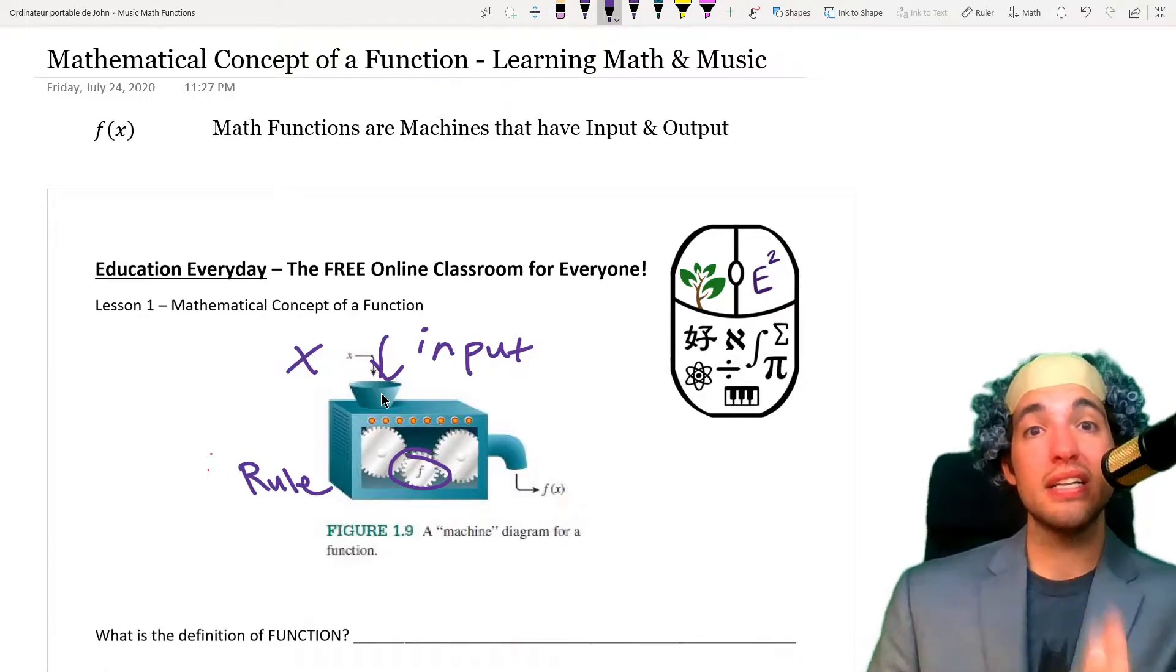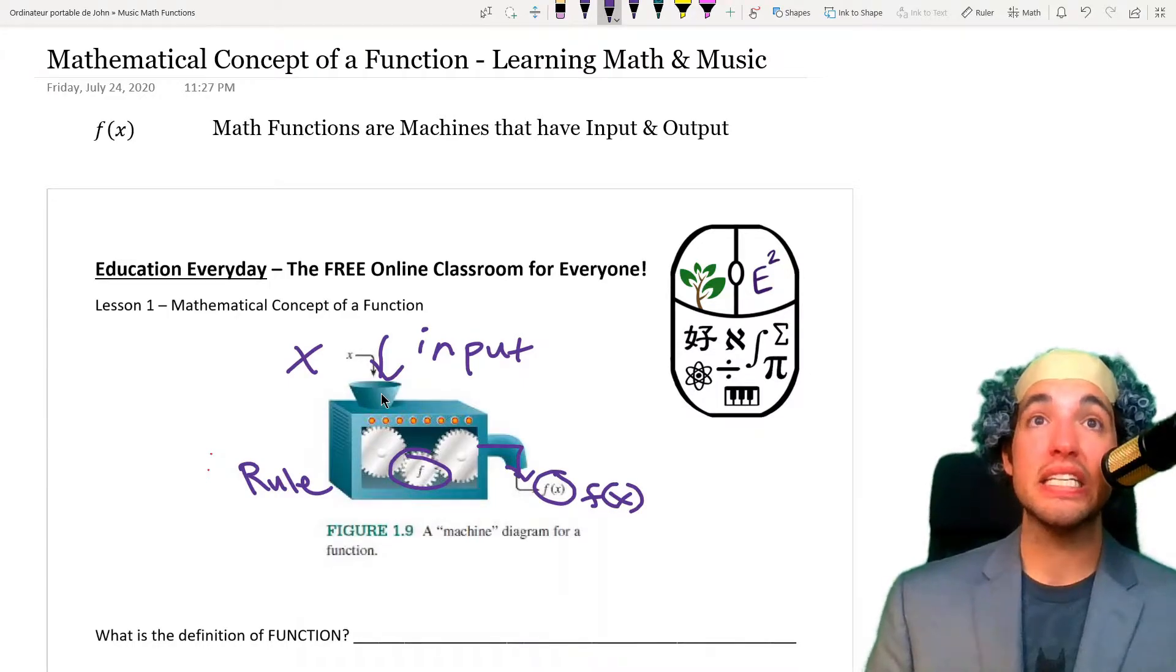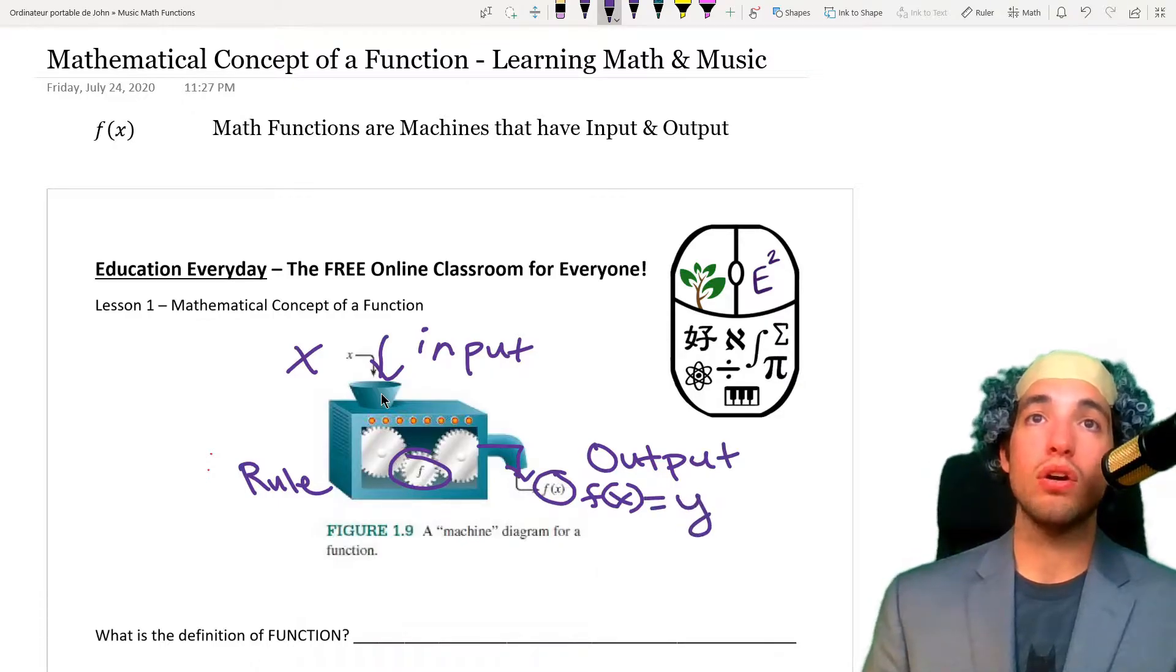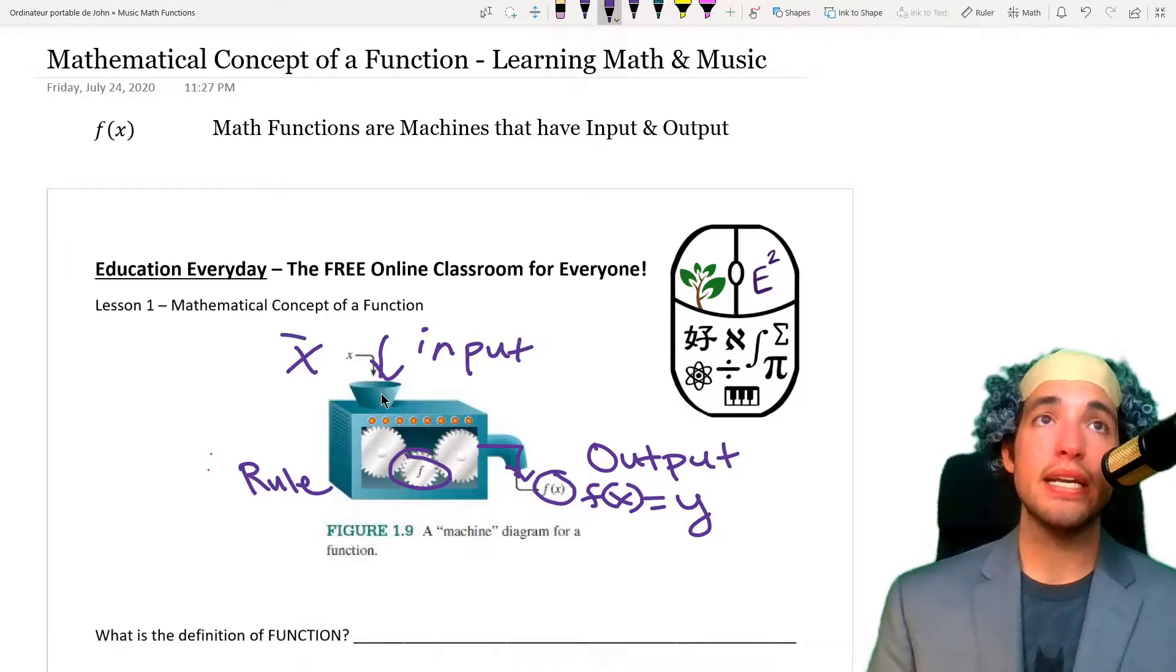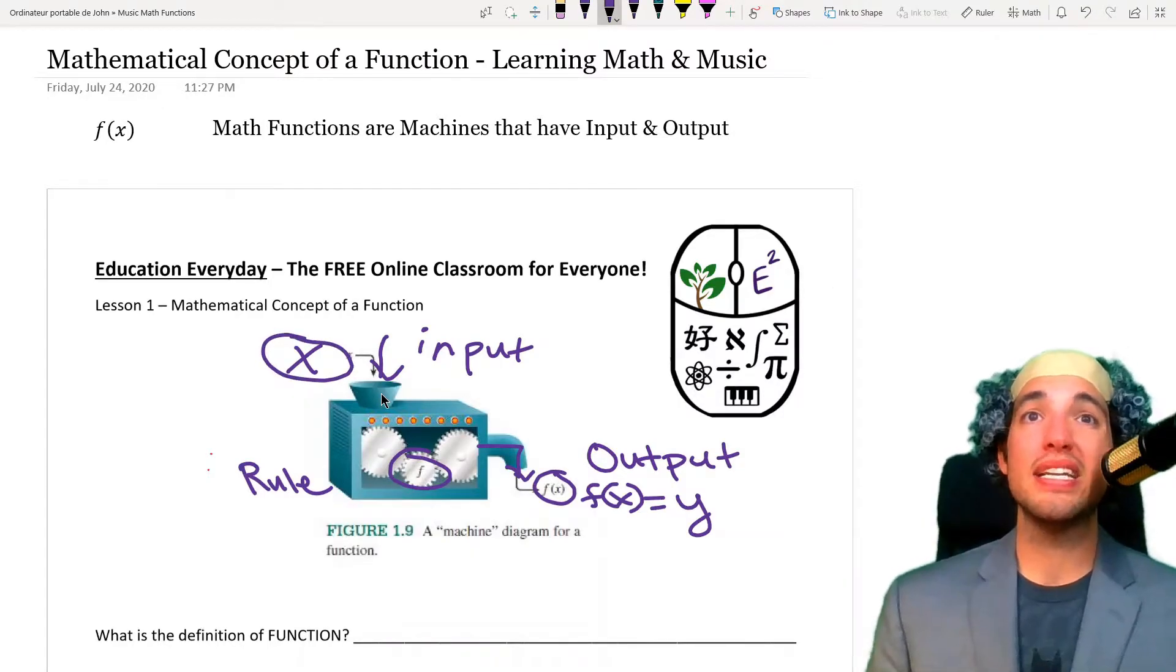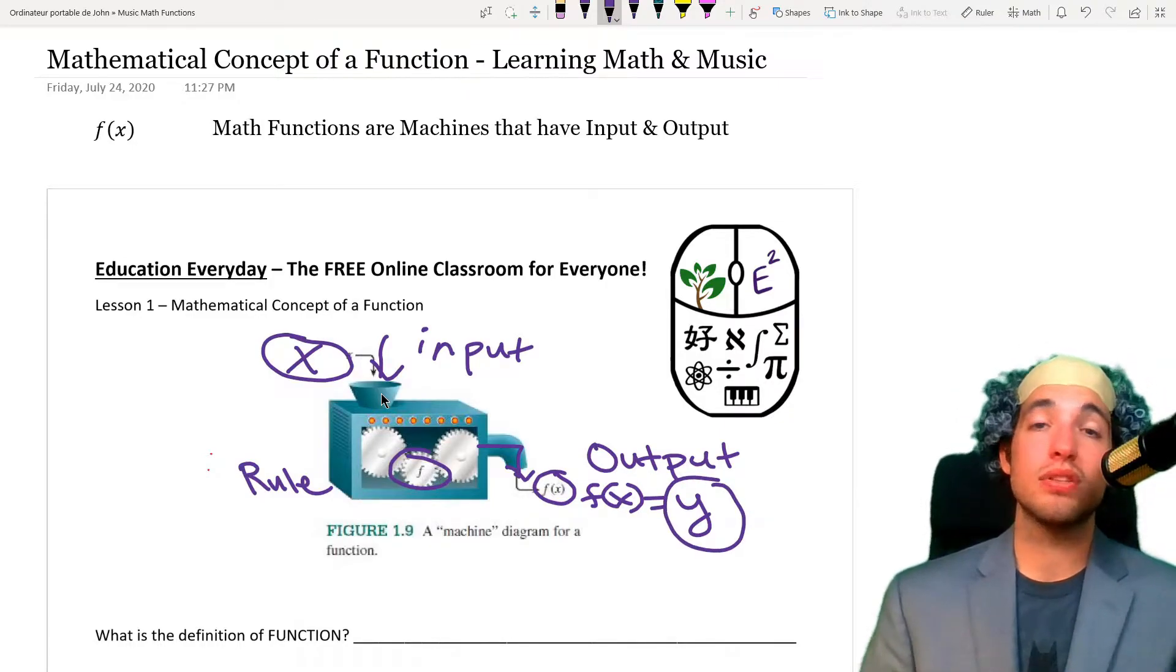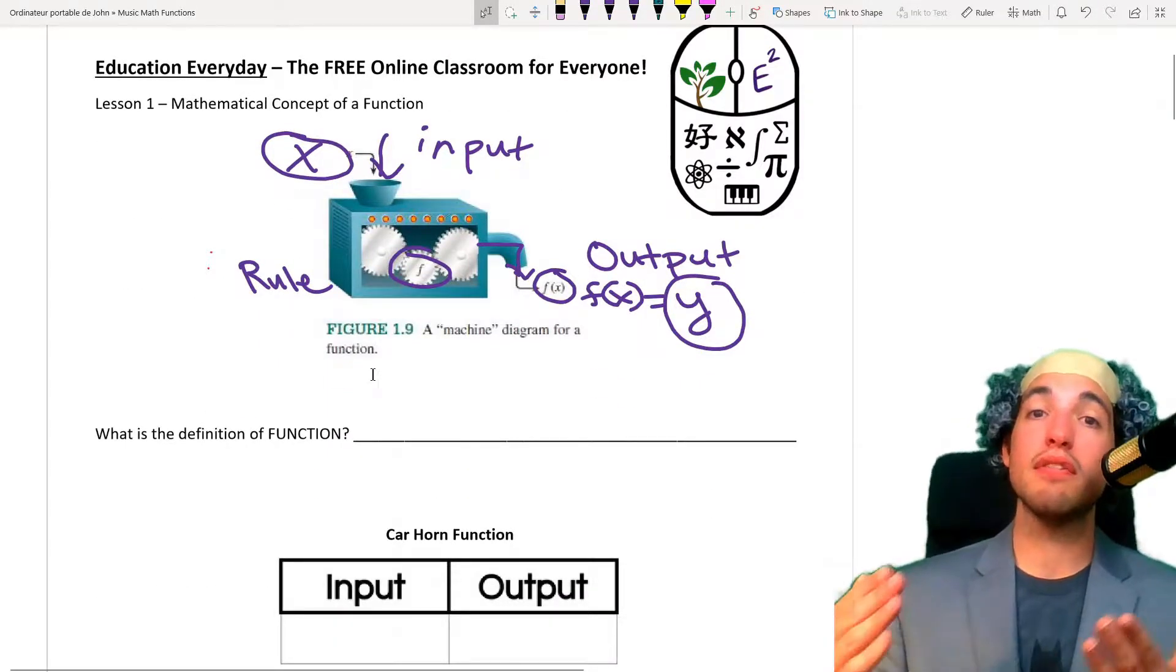And then once it does its rule, it will put something out. And what it is putting out is this f of x. That is the output. And the f of x, that is the same thing as y. So, very easy to remember. When you're first learning math, you start with x, and then you get a y as a result out of that. So, this is the same thing. We're just building upon it.